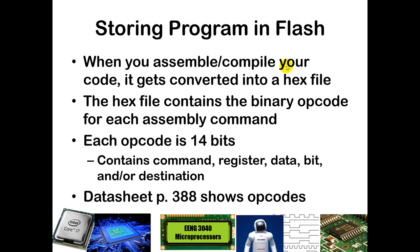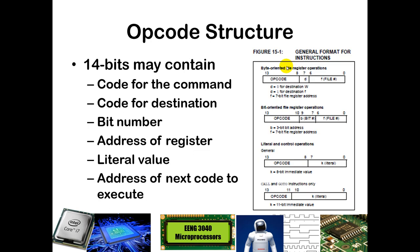When you write code in assembly, those assembly commands are directly translatable into 14-bit opcodes. If you write code in C, the compiler builds the equivalent assembly commands, and then those commands get translated into machine code. Every opcode is 14 bits wide, telling you something about the command itself and various arguments it needs. You can read all about those opcodes on page 388 in the data sheet, and I will show you that table in the next slides.